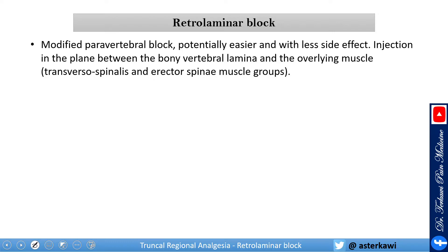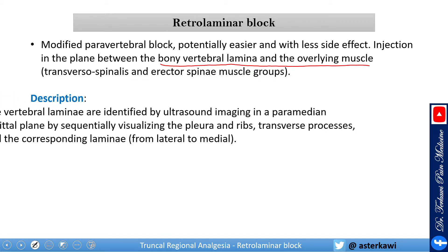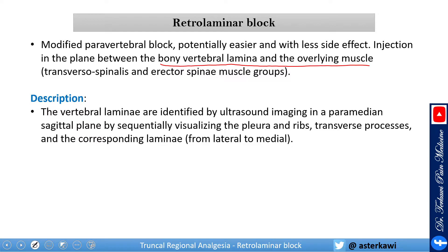The injection is in the plane between the bony vertebral lamina and the overlying muscle — as simple as that. The vertebral laminae are identified by ultrasound imaging in a paramedian sagittal plane.